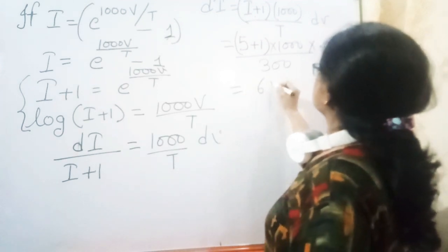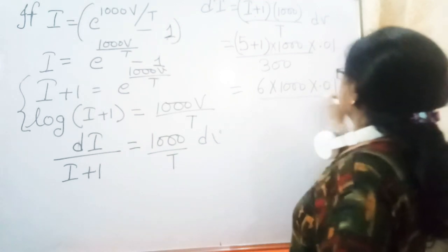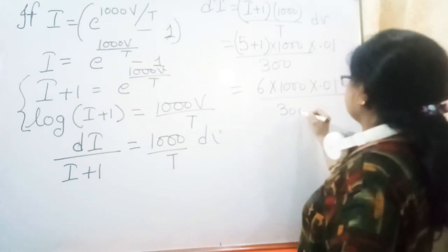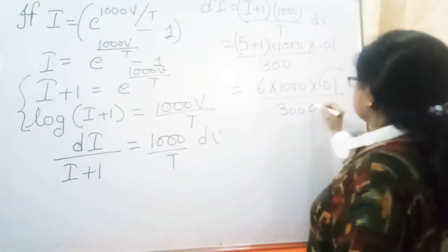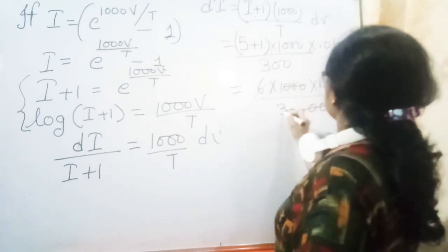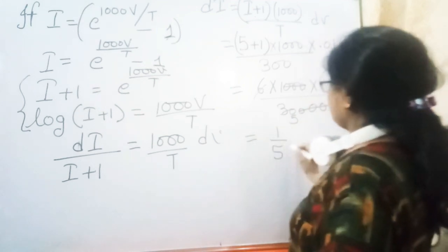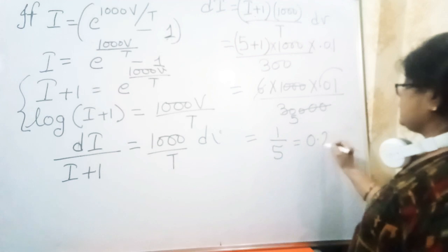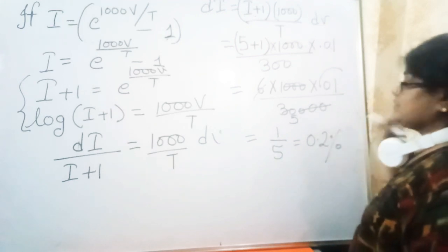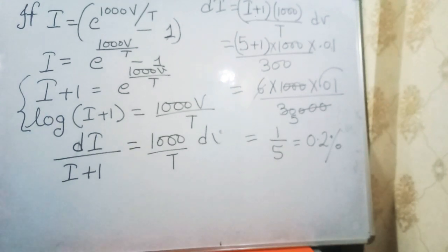We can calculate easily. The percentage error in current is 6 times 1000 times 0.01 over 300. Two zeros cancel, 3 cancels, 6 divided by 5 gives 30 over 5, which equals 1 over 5, or 0.2 percentage error.